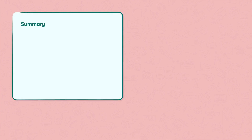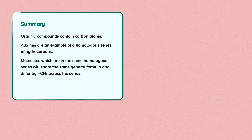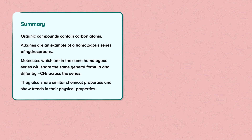Summary. Organic compounds contain carbon atoms. Alkanes are an example of a homologous series of hydrocarbons. Molecules which are in the same homologous series will share the same general formula and differ by CH2 across the series. They also share similar chemical properties and show trends in their physical properties.